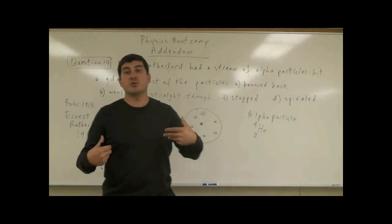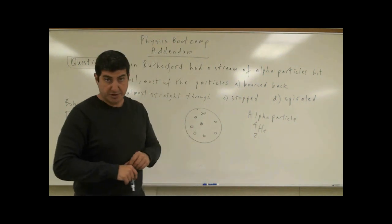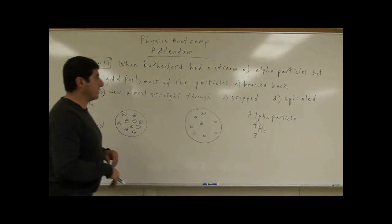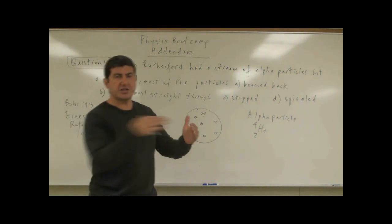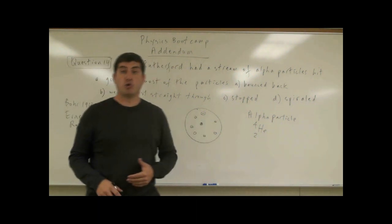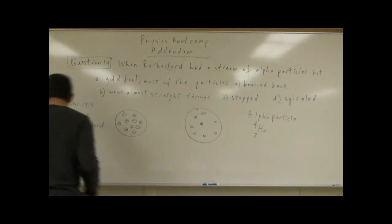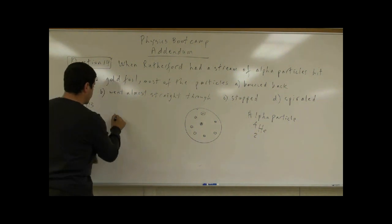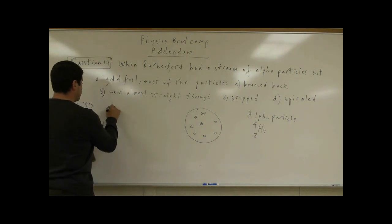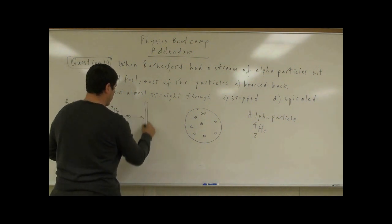We can obtain alpha particles from the radioactive decay of certain elements. Rutherford took these positively charged alpha particles and shot them through a gold foil. Imagine these positively charged alpha particles being shot through, with the gold foil in their path.